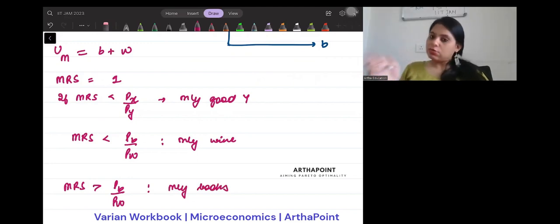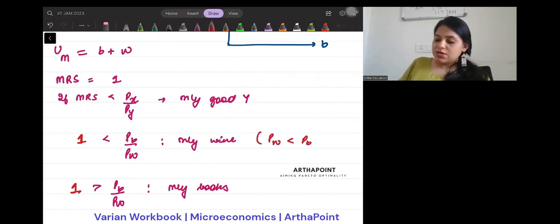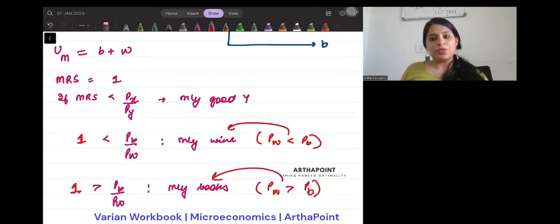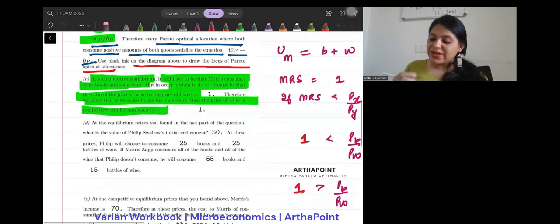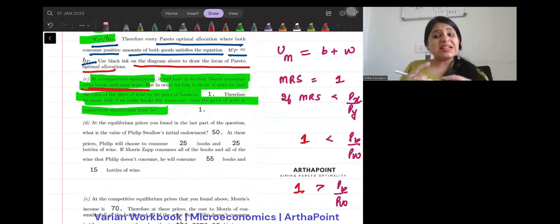Of course I know that MRS that I found out is 1. So I can just plug in 1 here, I can just plug in 1 here. So this gives me that if PW is less than PB, I consume only wine. And this gives me if PW is greater than PB, I consume only books. This is clear to us. Now if we think about it, we must see that the question is asking when it will be possible that he consumes some books and some wines.